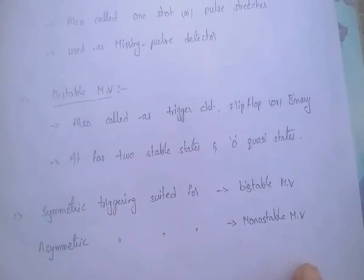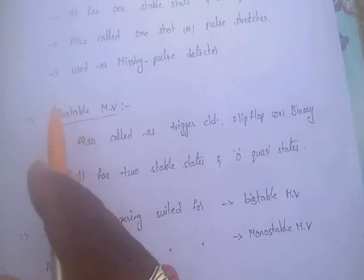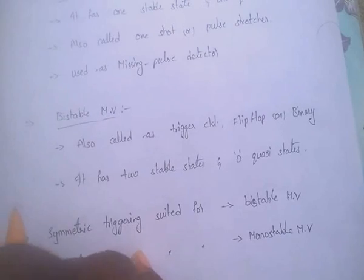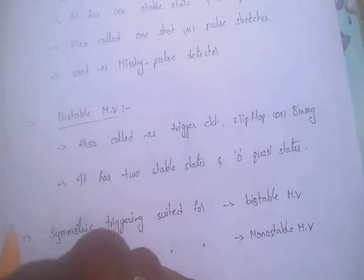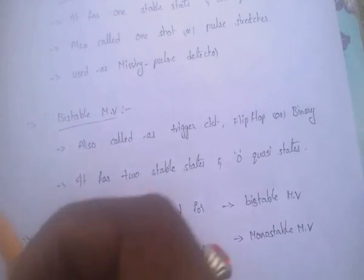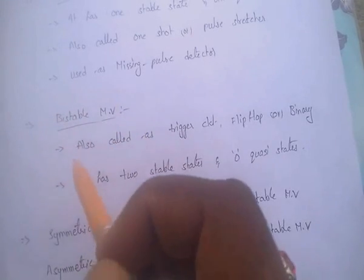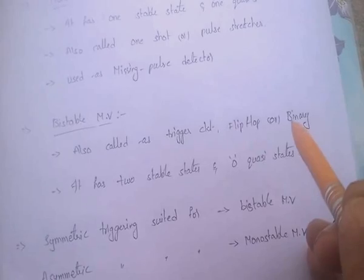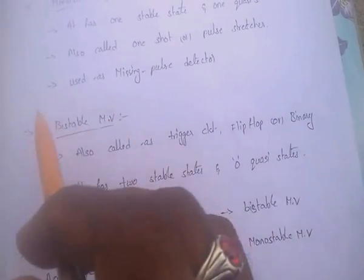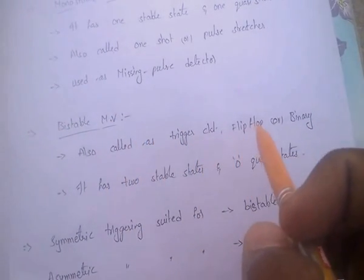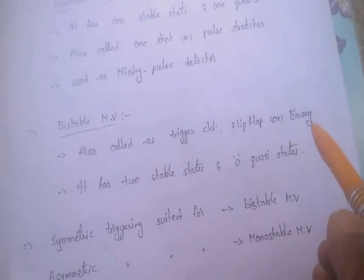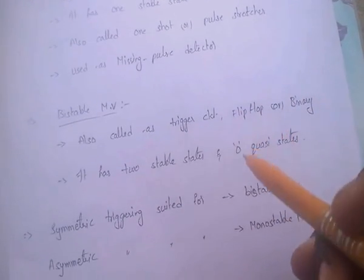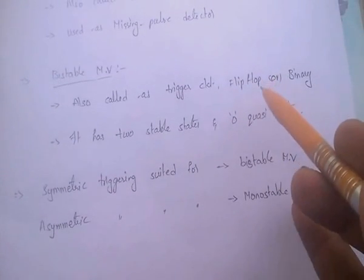Bistable multivibrator: 'bi' means two, so it has two stable states and zero quasi-states. It is also called a trigger circuit, flip-flop, or binary, because a flip-flop also has two stable states — Q(n) and Q(n+1).